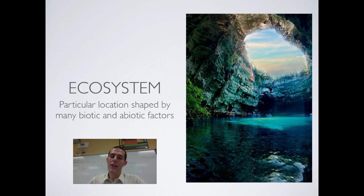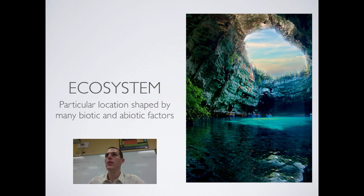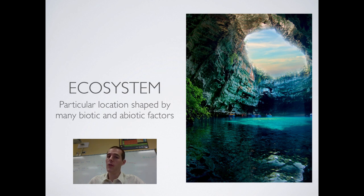We'll start out by talking about what an ecosystem is. An ecosystem, technically defined, is a particular location shaped by many biotic and abiotic factors. The biotic factors of an ecosystem are going to be all the living things, like the plants, the animals, the fungi, the microbes. The abiotic factors are temperature, the amount of oxygen, pH of the soil, composition of the water. Every ecosystem is going to have a very particular set of plants and animals that live there. Ecosystems are combinations of abiotic and biotic factors interacting together to produce a unique place.